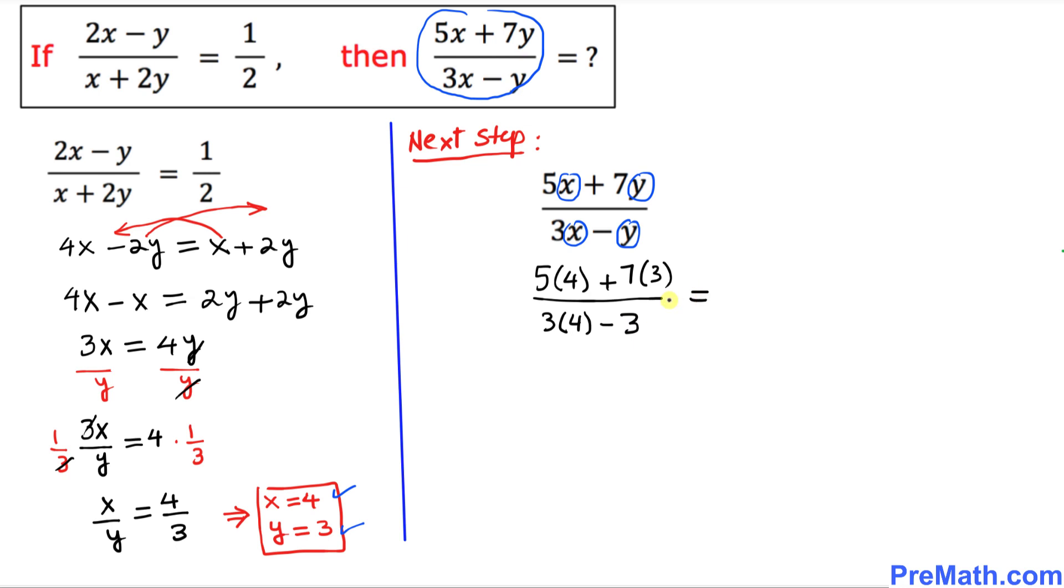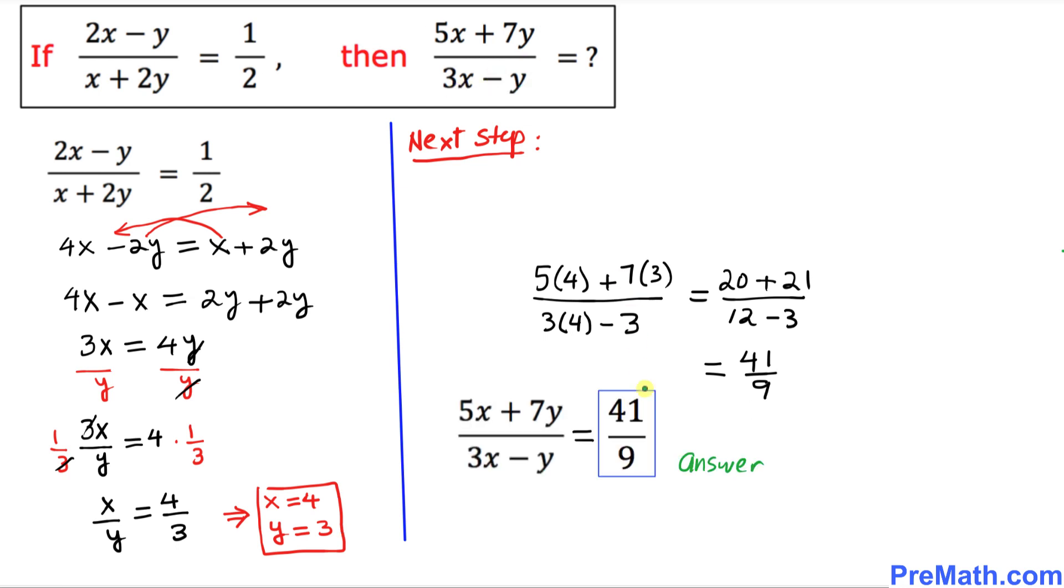Simplifying, 5 times 4 is 20 plus 21 equals 41 on top, and 12 minus 3 equals 9 on the bottom. So the value of (5x + 7y)/(3x - y) = 41/9. That is our answer.